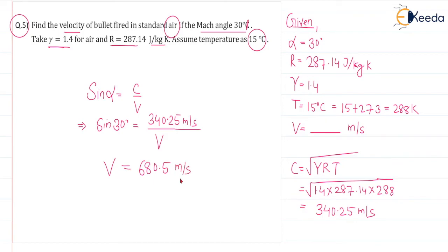So if you divide 340.25 by sine 30, you will be getting 680.5 meter per second and that is the correct answer because we have to find the velocity of the bullet fired. So this is the final answer, 680.5 meter per second. Thank you.